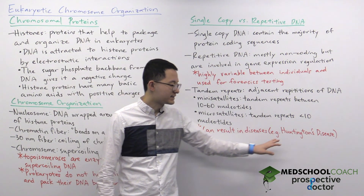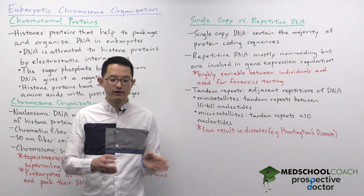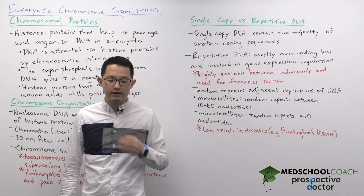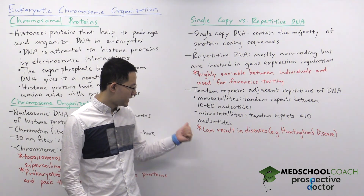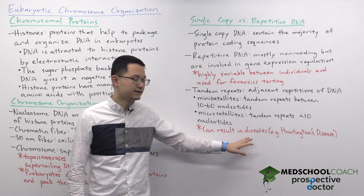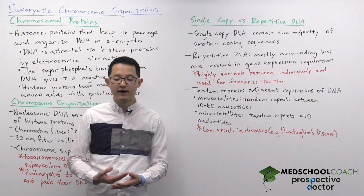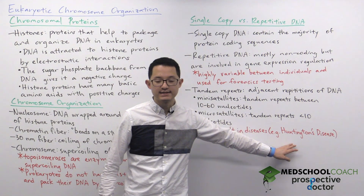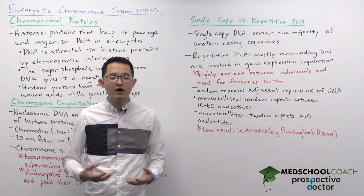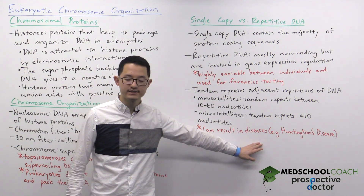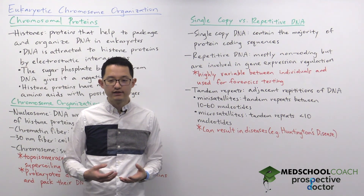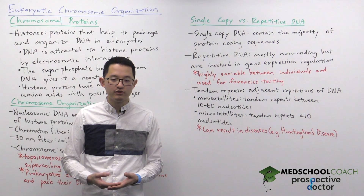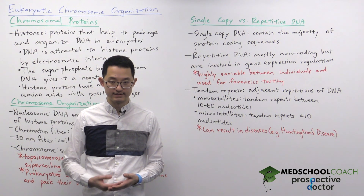A good example of microsatellites is Huntington's disease, where three nucleotides — CAG — are repeated over and over again. These tandem repeats are important because they can result in disease. In Huntington's disease, if there is a small number of these CAG microsatellite repeats, the individual will not have the disease. As the number increases, the individual's risk for Huntington's disease starts to rise, and past a certain number of copies the individual is guaranteed to have Huntington's disease.